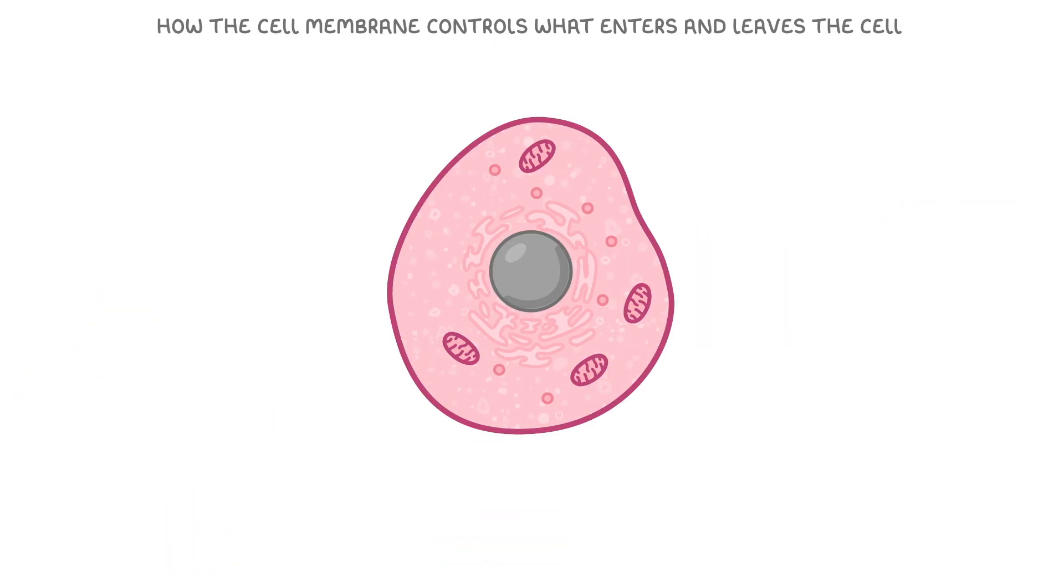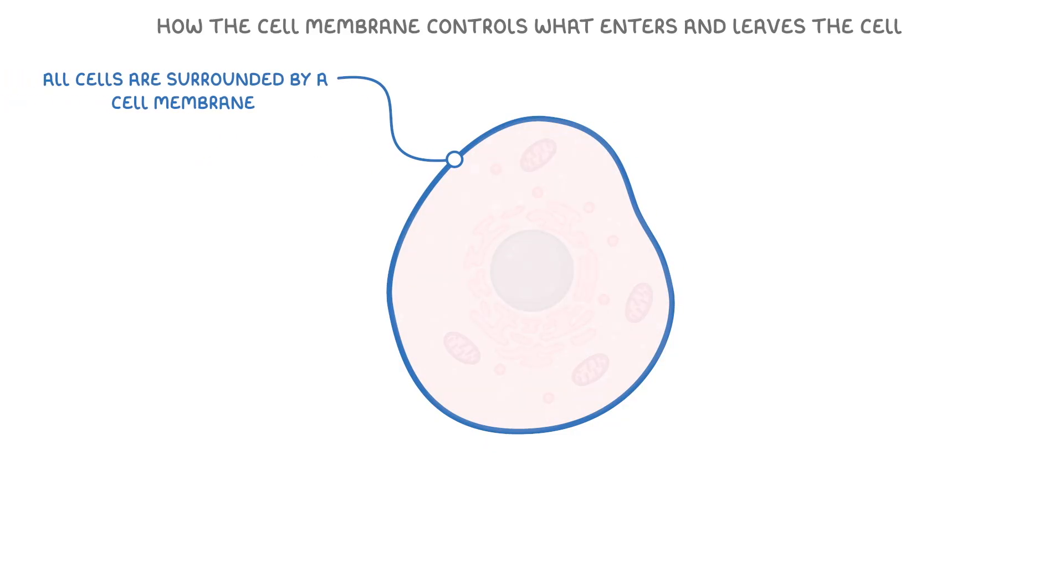Next, let's look at how the cell membrane controls what enters and leaves the cell. A key feature of all cells is that they are surrounded by a cell membrane. Importantly though, these membranes are selectively permeable, and this selective permeability is crucial for keeping the cell healthy.